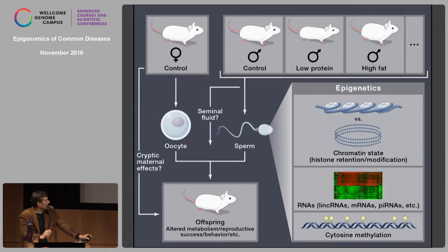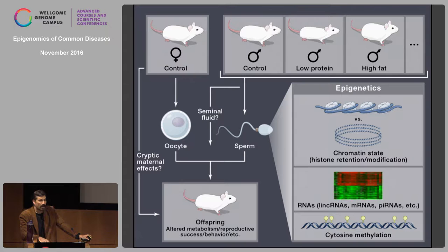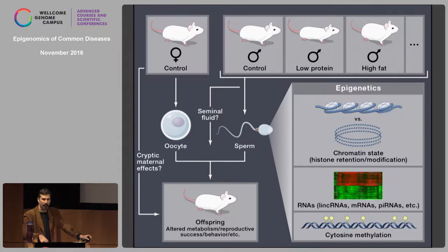Assuming sperm carried the information, we began epigenomic profiling of mouse sperm. We don't think the answer is chromatin packaging, and we don't think it's cytosine methylation. Our best lead is in small RNAs, which are central to some of the best-characterized transgenerational epigenetic inheritance systems like paramutation in maize and RNA interference in C. elegans. It's a bit of a bummer that the answer is small RNAs because I'm at UMass Med School, which means I'm now the 50th best person at my own institution at what I do — but on the other hand, I get the advantage of all my colleagues' expertise.